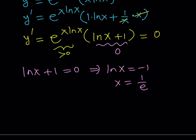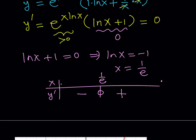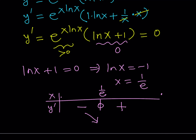Now we're going to look at the graph of this function, and we can also make a sign table for the derivative. We have 1 over e as the critical point, and x values range from 0 to positive infinity. What happens to the right of 1 over e? At x equals 1, the derivative gives e to the power of 0 times (ln 1 + 1) = 1 times 1, which is positive. So to the right of 1 over e the derivative is always positive, and to the left it's negative. This tells us the function is decreasing before 1 over e and increasing after, which means the function has a minimum at x equals 1 over e.